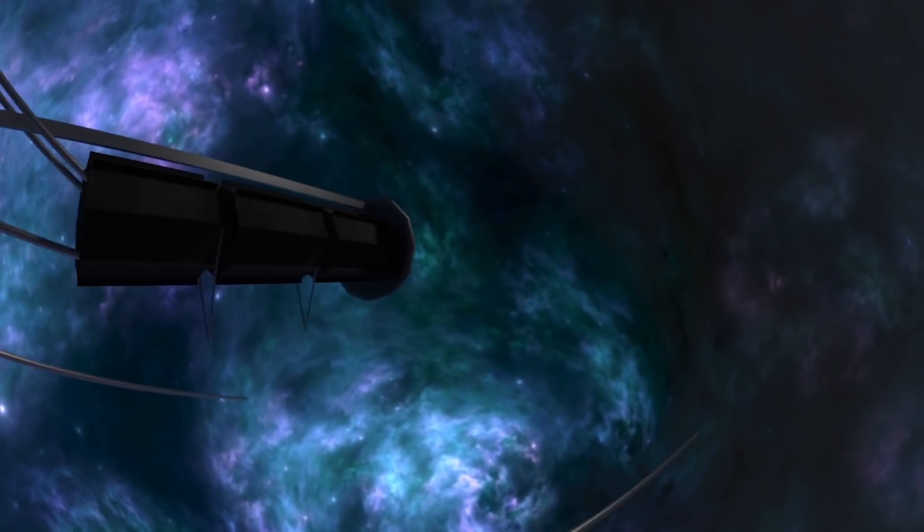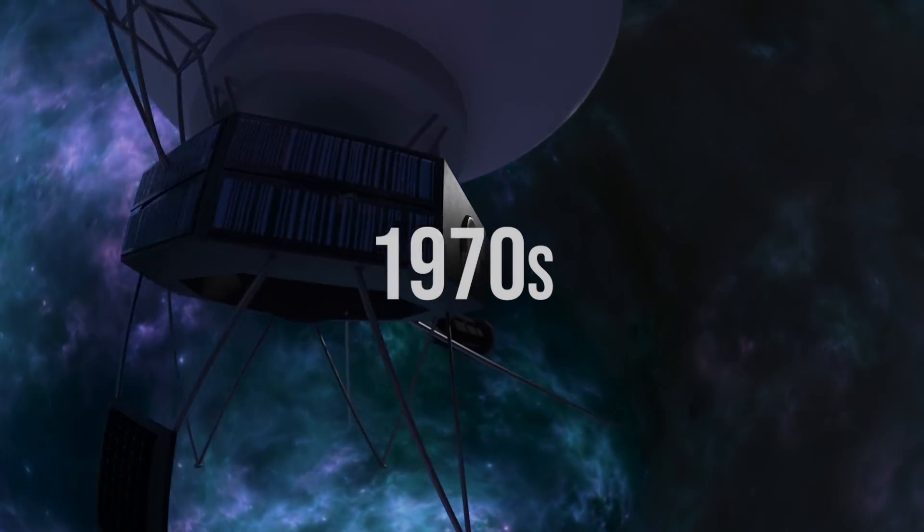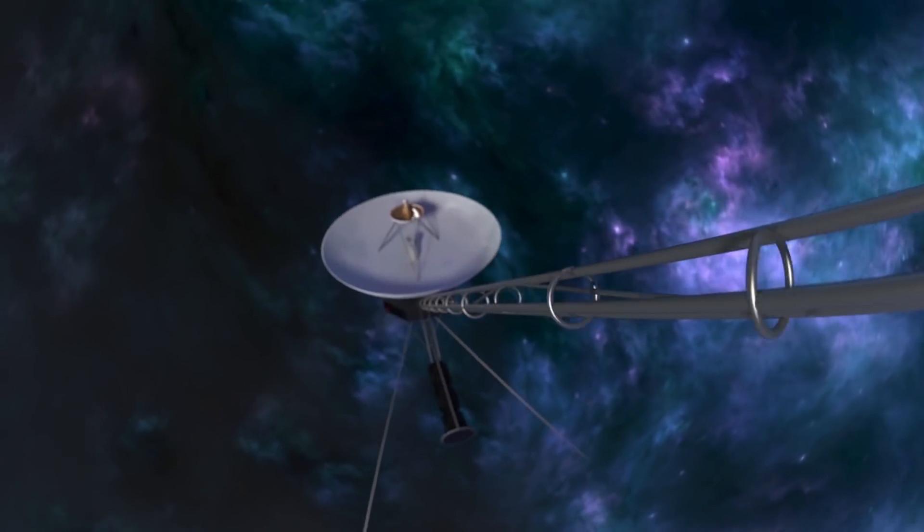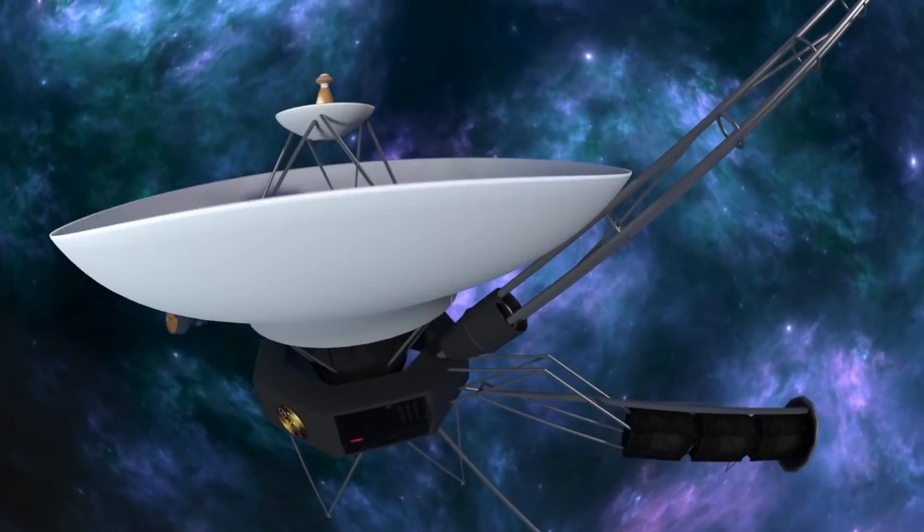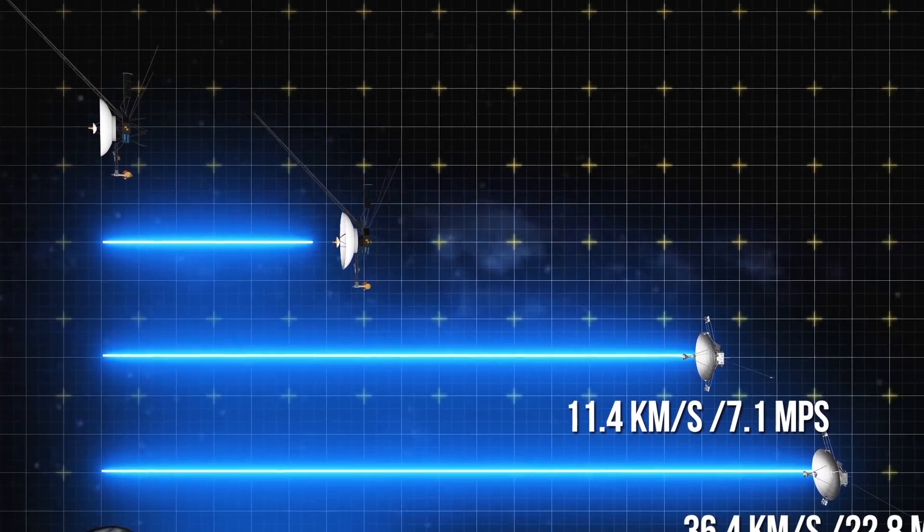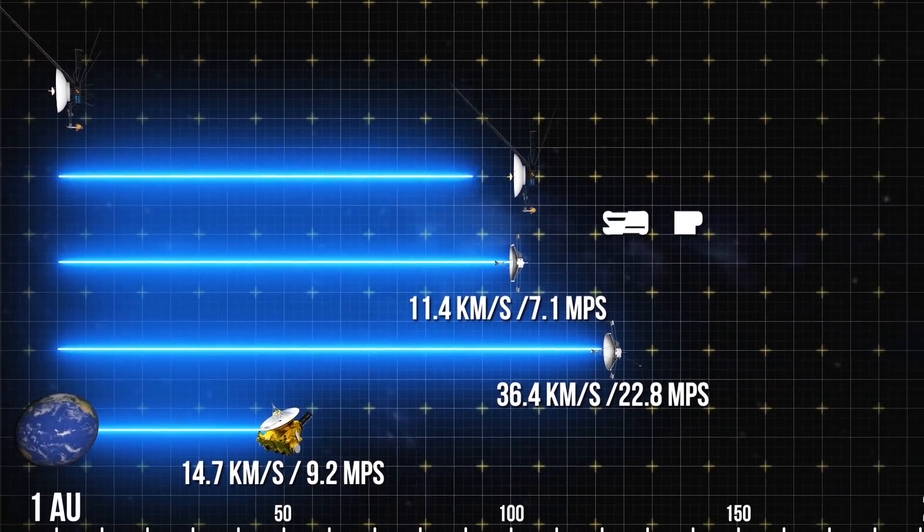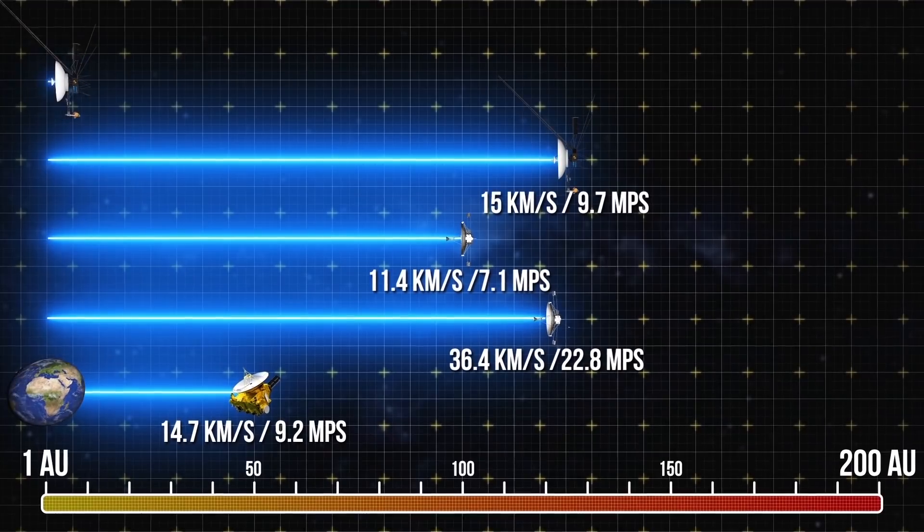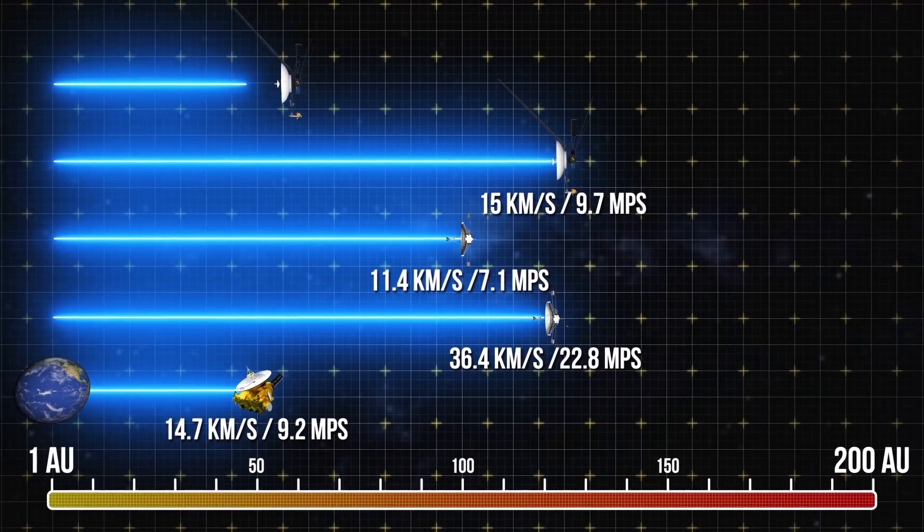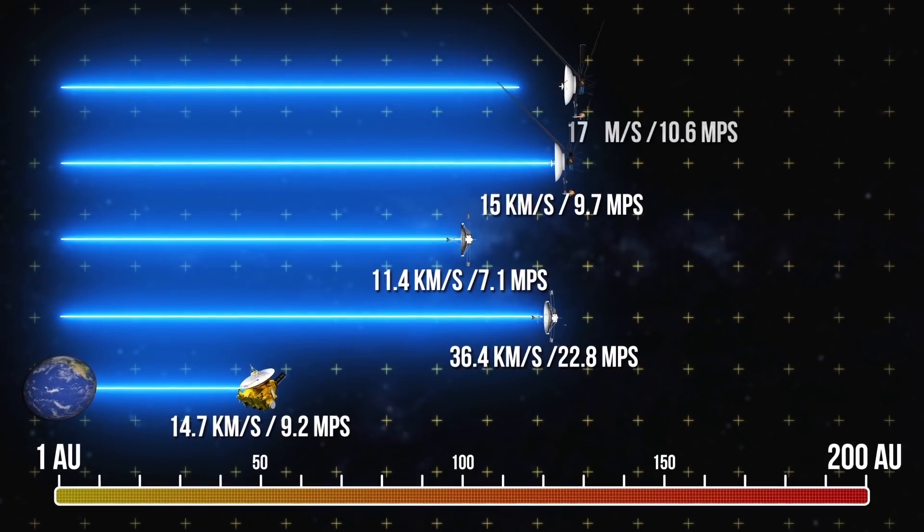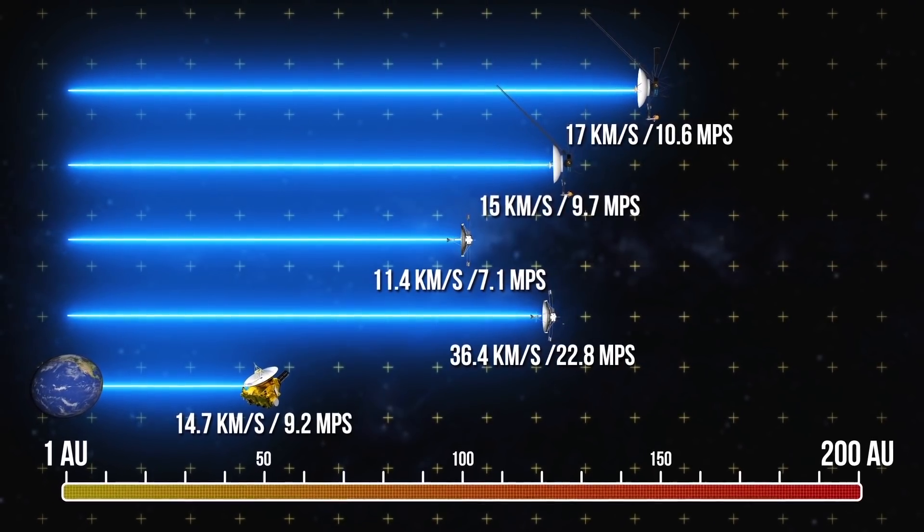The Voyager 1 and Voyager 2 probes launched in the late 70s can be called record holders in this space marathon. Voyager 2 has already flown over 122 astronomical units, while its twin brother set a flight distance record over 147 astronomical units.